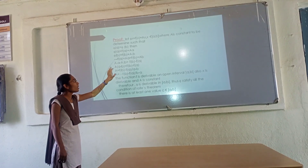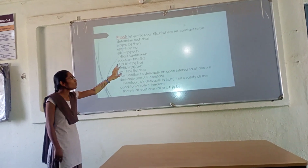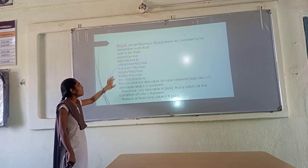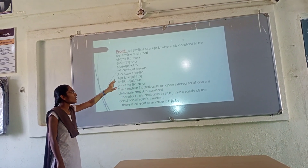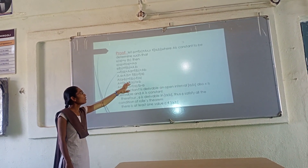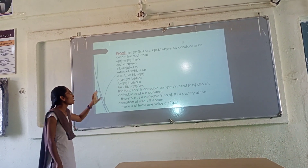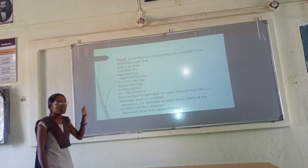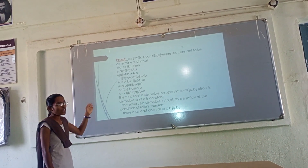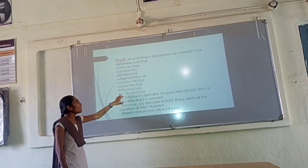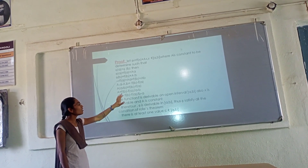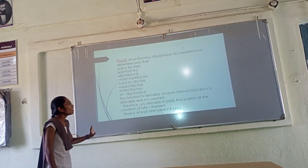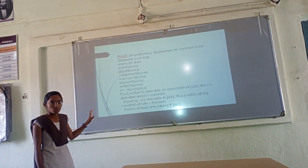Then A·a minus A·b = f(b) minus f(a). Taking A as a common factor: A(a minus b) = f(b) minus f(a), so A = [f(b) minus f(a)] divided by (a minus b). Multiplying the minus sign to the right-hand side, we get A = minus [f(b) minus f(a)] divided by (b minus a). This is the value of the constant A.